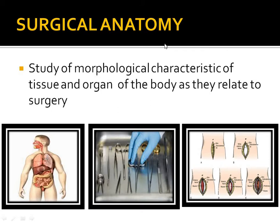When operating, we first see the superficial fascia, then the deep fascia, then the muscles of the abdomen — including the external oblique muscle, internal oblique muscle, and transverse muscle — then the transversalis fascia and peritoneum, and then we operate on the intestine. That is surgical anatomy.